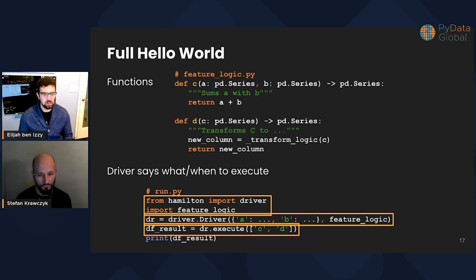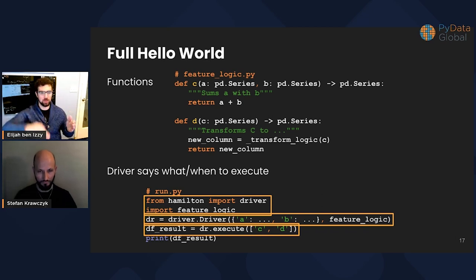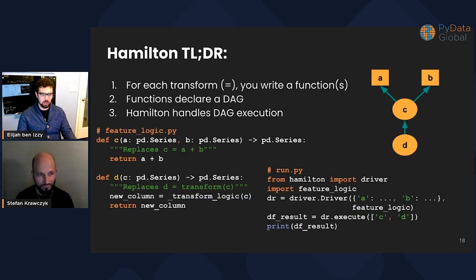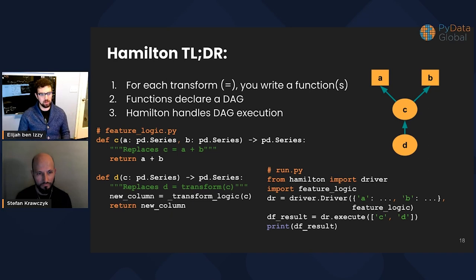Here's what the whole hello world looks like. You don't just write the functions — there's one more piece: you write the driver. The functions are all contained within modules, so it's nice and modular. The driver says what and when to execute. You import the driver, import those functions, instantiate the driver, pass it any configuration to get it started and the functions you need it to run, and then run the result. In this case we're going to get a data frame, but again it can work with anything, not just series or data frames. For each transform, you write a function. Functions declare a directed acyclic graph — a DAG — and Hamilton handles the execution of this DAG.